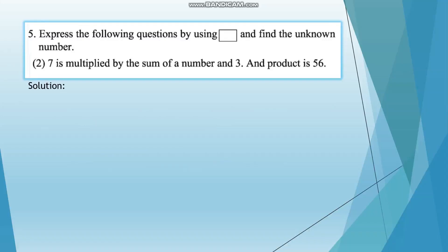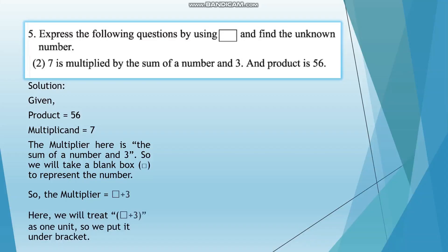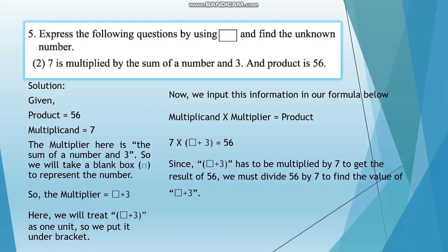To solve this, we start by listing the information. The product is 56, the multiplicand is 7, and the multiplier is the sum of the number and 3. We take a blank box to represent the number, so the multiplier equals blank box plus 3. We treat blank box plus 3 as one unit under a bracket. Substituting into the formula: 7 multiplied by (blank box plus 3) equals 56. Since blank box plus 3 is multiplied by 7 to get 56, we divide 56 by 7 to find the value of blank box plus 3.